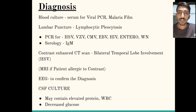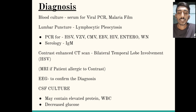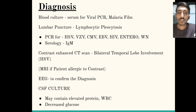For investigation and diagnosis, we perform blood culture and serum for viral PCR. A malaria film should also be done because of the chance of cerebral malaria in endemic regions. On lumbar puncture, we look for lymphocytic pleocytosis, which is seen in viral infection. PCR is done for HSV, varicella zoster, CMV, EBV, HIV, and enterovirus. Serology is done for immunoglobulins, specifically IgM.